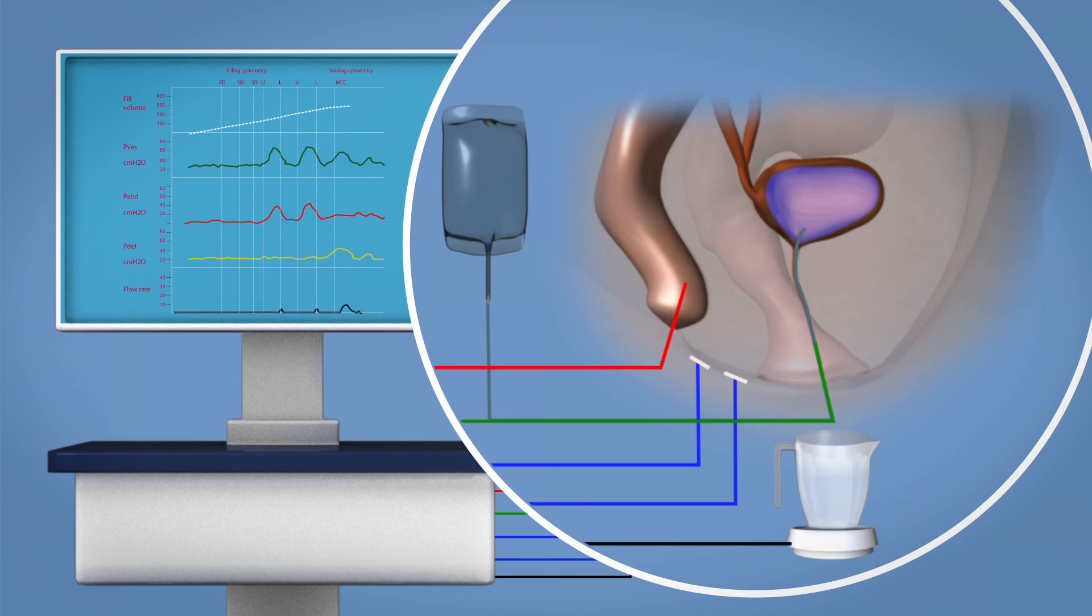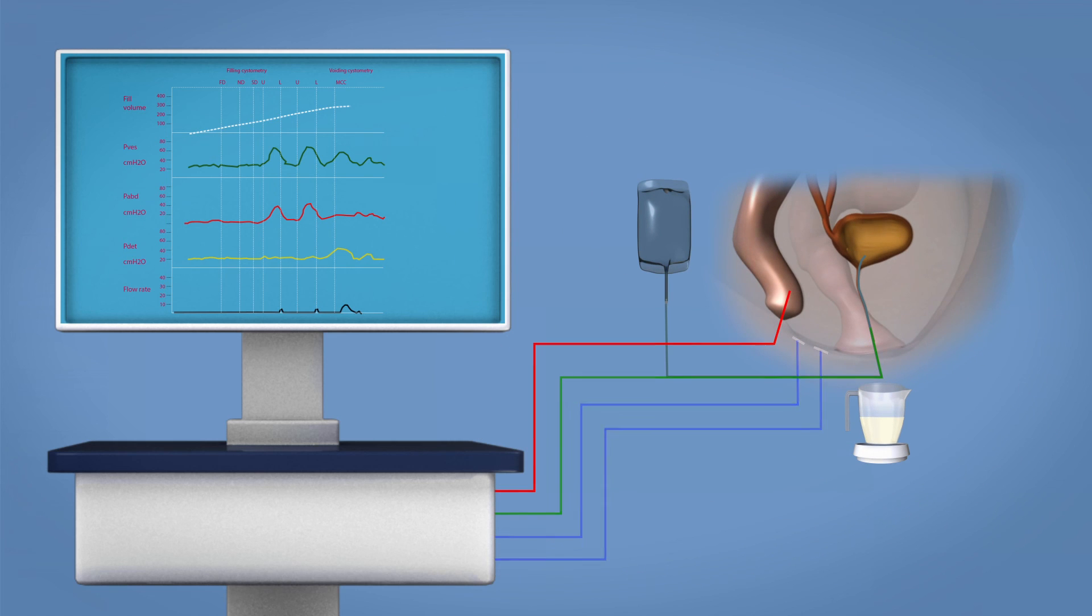When your bladder is full, you will be asked to urinate while the pressure is being measured. The catheters and sensors will be removed at the end of the cystometry test.